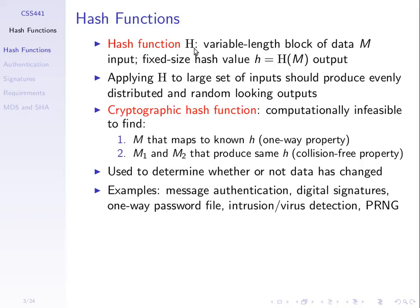A hash function - what do we expect? The notation we'll use: uppercase H to indicate the hash function. The hash function takes a variable length input M - some block of data, some message as input - and it produces a fixed size output called the hash value. The hash value is unfortunately often written as lowercase h. So uppercase H is the function, lowercase h is the output value. The input can be any length, the output is a defined length, usually small.